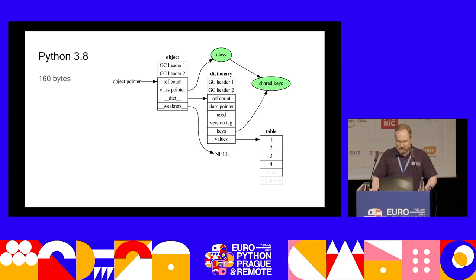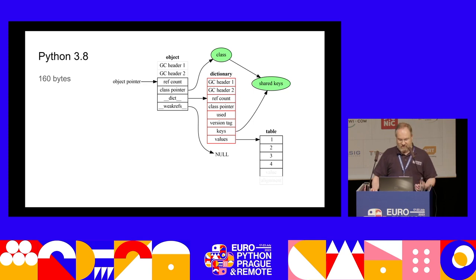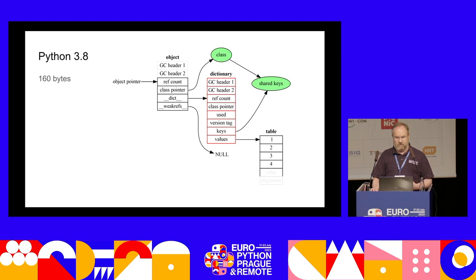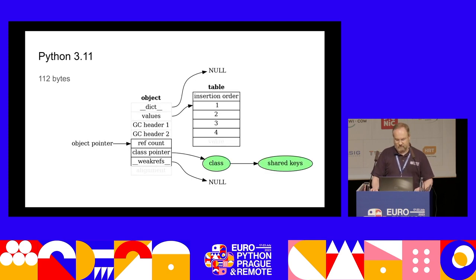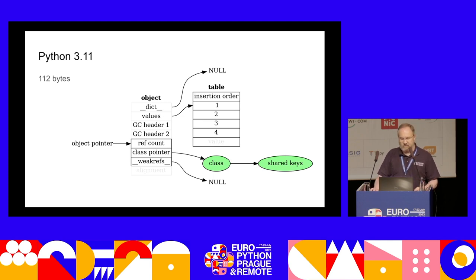There was a huge redundancy: the entire dictionary object had no actual information. All the data was in the values table; everything else just said 'I'm a dictionary' with a GC header, reference count, class pointer, and other largely redundant fields. So in Python 3.11, we removed the dictionary object altogether. If you actually need the dunder dict in 3.11, it's dynamically recreated — though we're looking in 3.13 to dynamically re-remove it again if it's no longer needed.